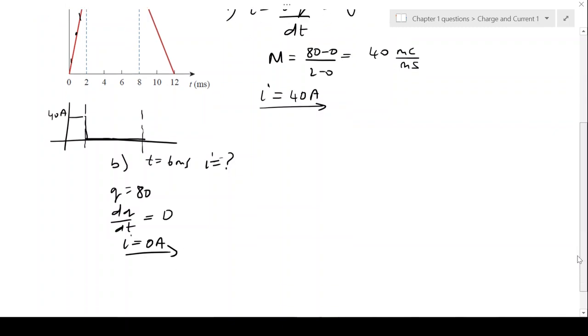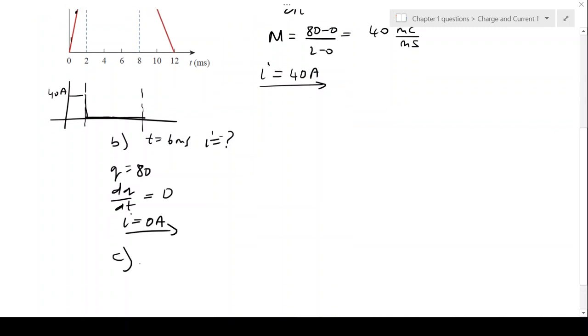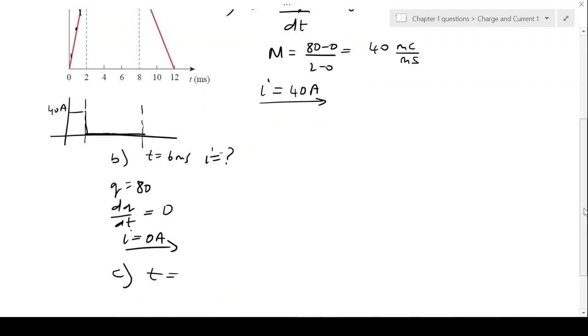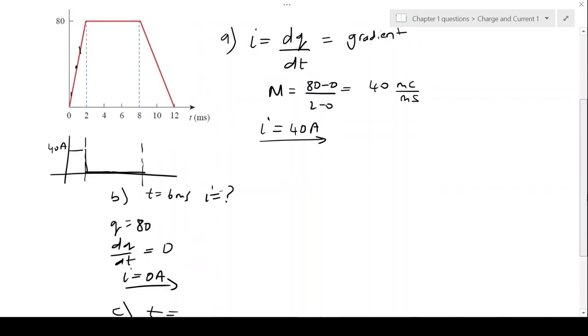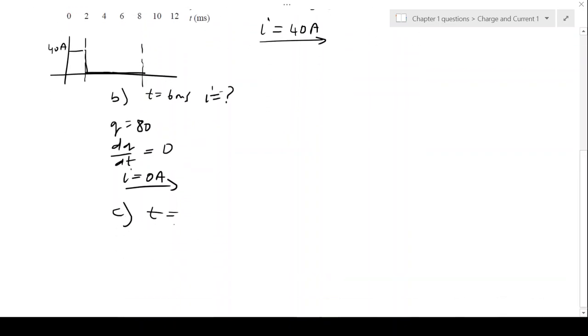Finally, when t = 10 milliseconds, which is in this region, what is the current? Again, the current gives us the gradient, dQ/dt. That's the change in y over the change in x.